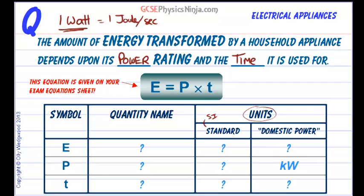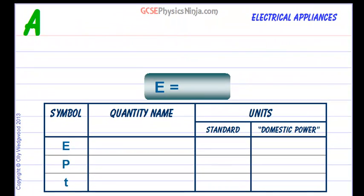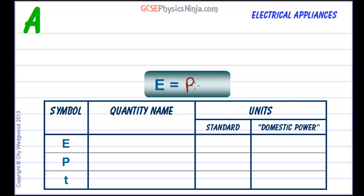Let's take a look at these units. Energy is power times time - that's your equation. E stands for energy, P stands for power, and t stands for time.